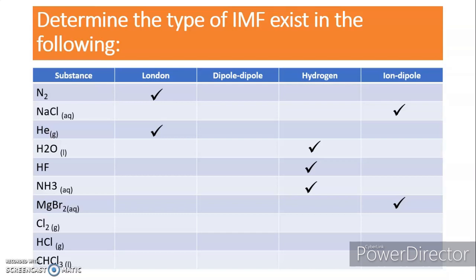Chlorine (Cl₂) — London dispersion forces. Hydrogen chloride (HCl) — dipole-dipole interaction, because of the polarity of HCl. Chloroform (CHCl₃) — hydrogen bonding, because of the carbon-hydrogen attraction. That's all for today — I hope you understand the intermolecular forces. See you in the next lesson!